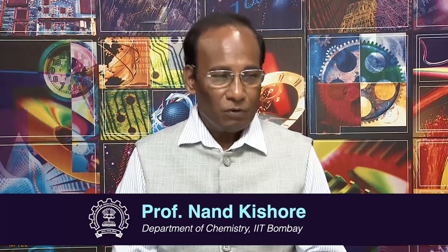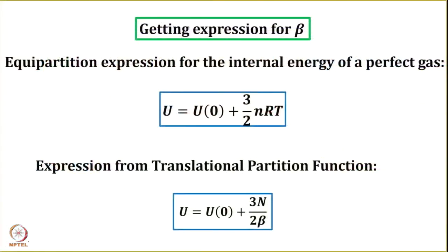Let us now talk about the constants alpha and beta which we used in Lagrange's method of undetermined multipliers. Earlier we have talked about alpha in terms of exponential alpha in one of the lectures, and today we are going to express beta in terms of temperature. We have been discussing that beta is equal to 1 over kT, but today we will prove it.